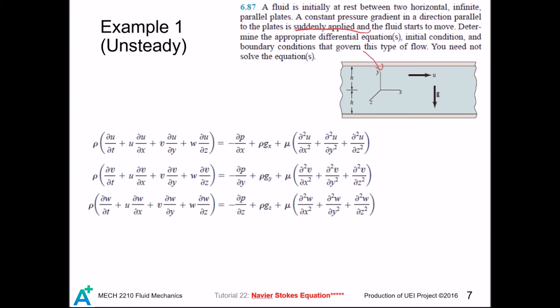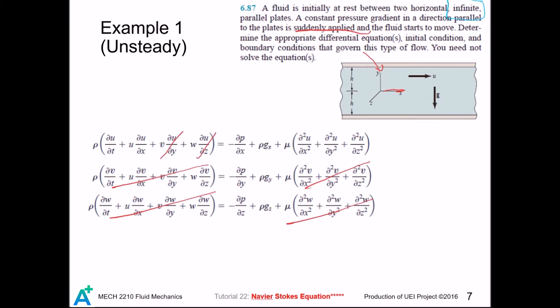First, we use this coordinate system, and clearly the flow direction is just the x direction. There is no velocity in the y and z directions, so these terms are all zero. Also, the pipe is infinite, so the velocity shall not vary in the side direction — that is the z direction, so this term goes out. Then, gravity acts on the y axis, so x and z are the horizontal directions and there shall not be any gravity component there.